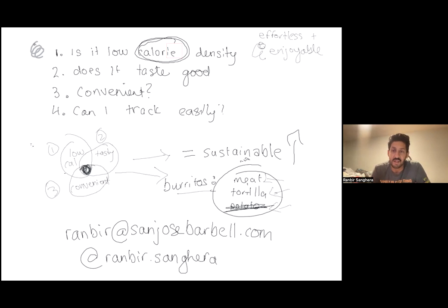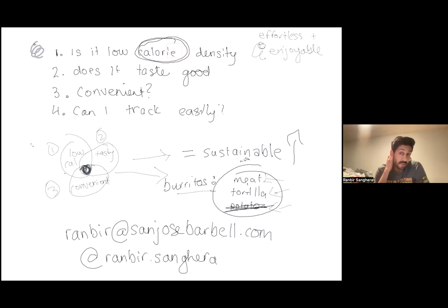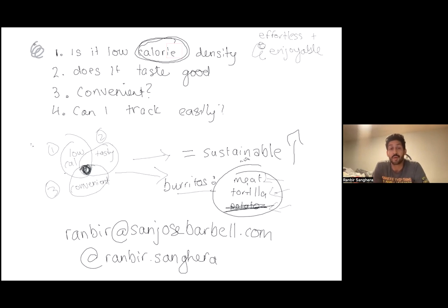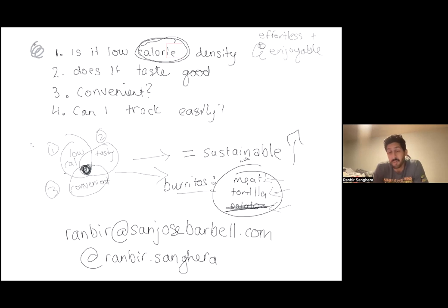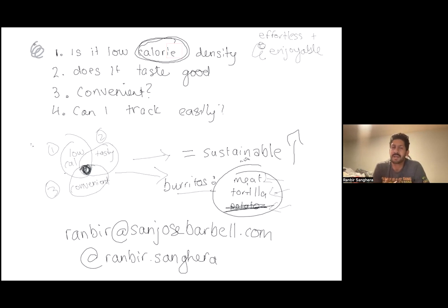The fourth lens is: can I track it easily? That comes down to how many ingredients there are. Meat, tortilla, potato — those are the only calorie items in my burritos, very easy to track. The less work I have to do, the more I'm engineering effortless fat loss. For someone who likes poke, that's super easy too — is it low calorie density? Yes: rice and fish.